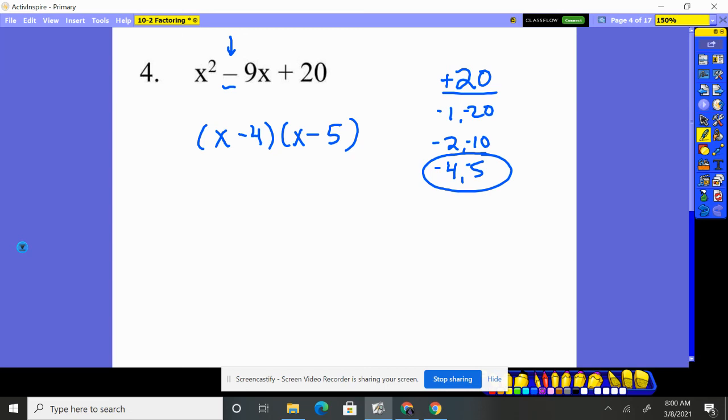Notice that if we did this, when we do that piece and that piece, it's going to be negative 4x and negative 5x. That gives you negative 9. And then when you do the negative 4 times the negative 5, you get that positive 20 right there.